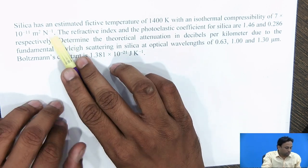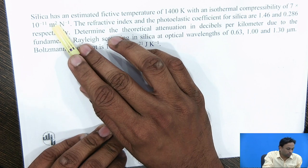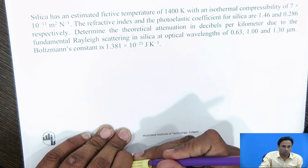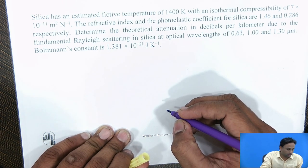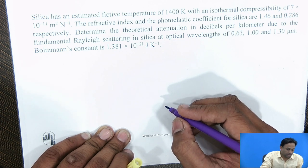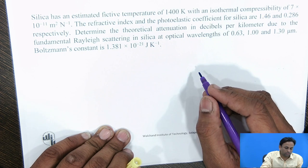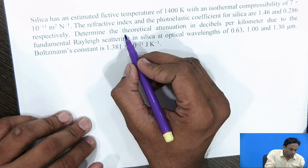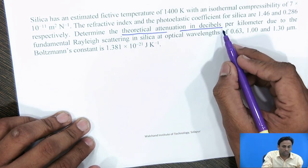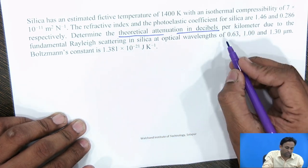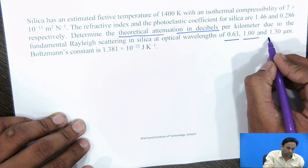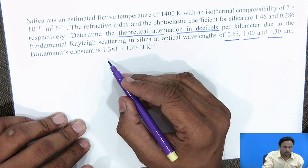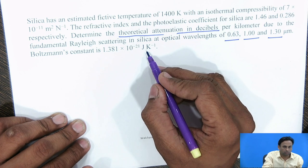Here is the problem: silica has an estimated temperature of 1400 Kelvin and an isothermal compressibility of 7 × 10⁻¹¹ m² per Newton. The refractive index and the photoelastic coefficient for the silica are 1.46 and 0.286 respectively. We need to determine the theoretical attenuation in dB per kilometer due to Rayleigh scattering at wavelengths 0.63, 1.0, and 1.30 micrometers. The Boltzmann constant is given as 1.381 × 10⁻²³ joules per Kelvin.